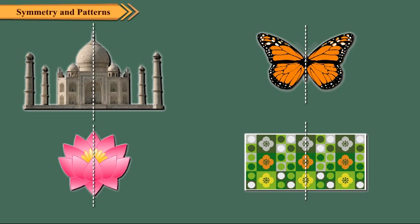Symmetry is a regular balanced arrangement on both sides of a line. If we fold the figure along this line, the two halves exactly match with each other. The line which divides the figure into two halves is called the line of symmetry.